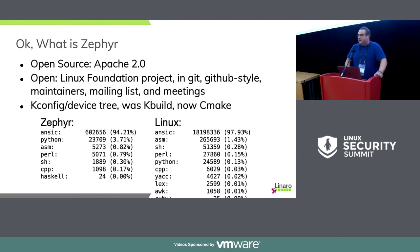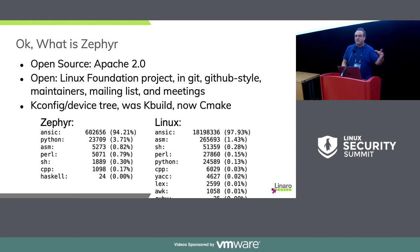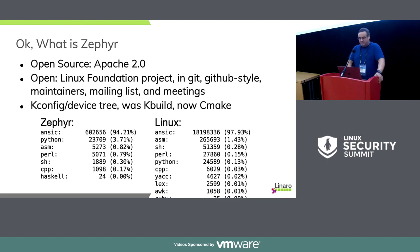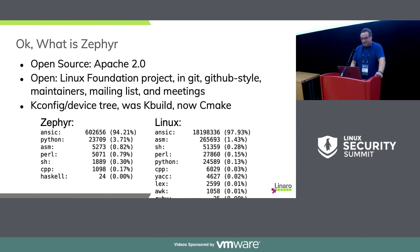We use kconfig and device trees. We used to use kbuild — that moved to CMake. Just to give you an idea, a little comparison between the Zephyr project source tree and the Linux tree as of about an hour and a half ago: there's a few more lines of code in the Linux kernel — it's a bit bigger. It's a C project, it's open source, and a lot of people came from the Linux world, bringing that development mindset and methodology.